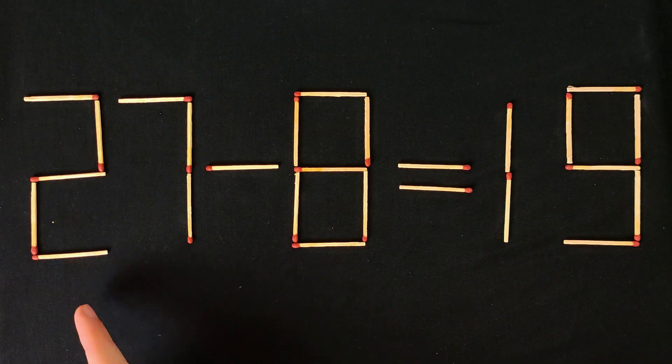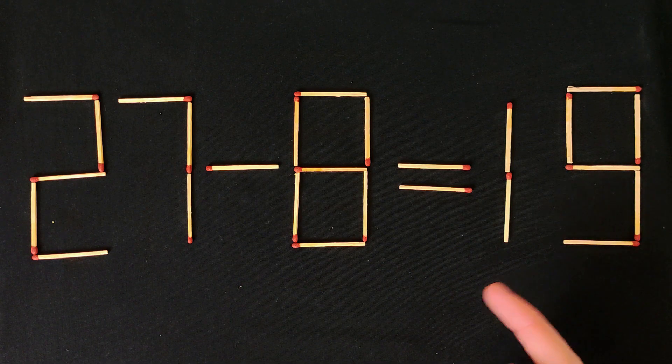And now, 27 minus 8 equals 19. It's a correct equation.